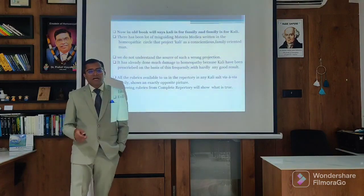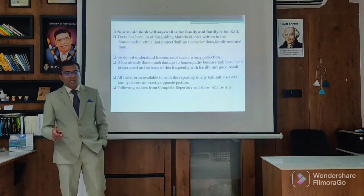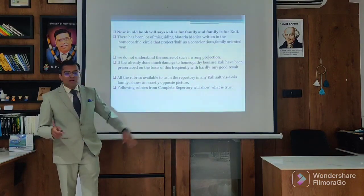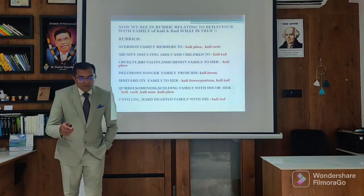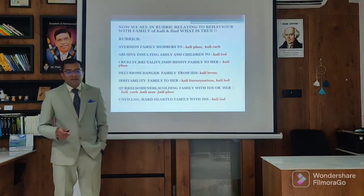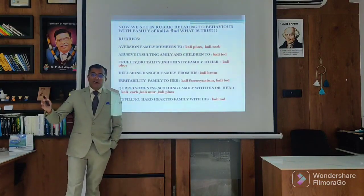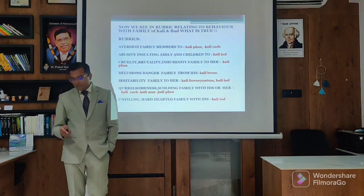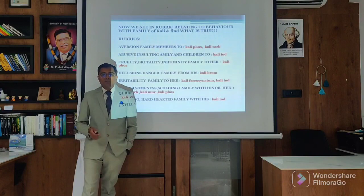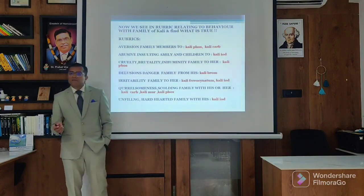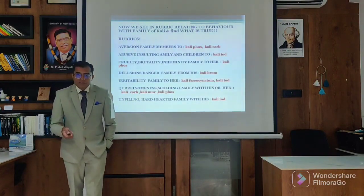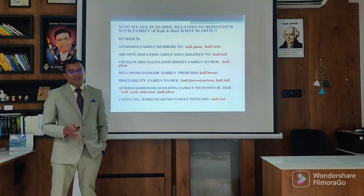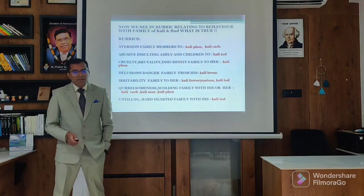Now in the old books we say 'Kali for the family and family for the Kali,' but we have to understand this from the point of the repertory. What we find in the repertory is that in the sycotic state of mind, Kali goes into a state against the family. We have read Materia Medica where it is written that it is a very family-oriented remedy, but when you go to the repertory, you have a different picture of the Kali.